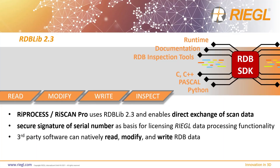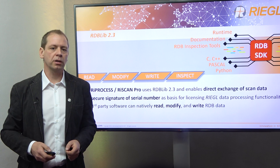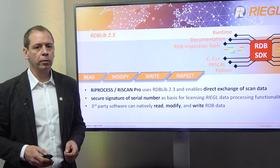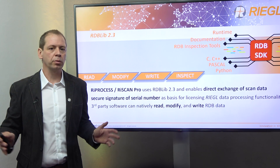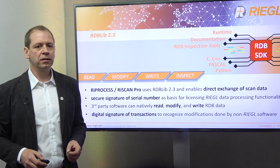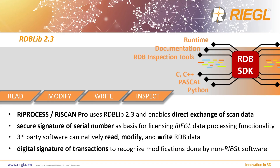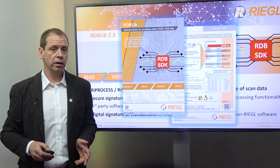I would also like to encourage you to make use of the RDB lib. If you are enthusiastic about programming in C, C++, Pascal, or Python, you will be able to read, modify, and write RDB data easily without too much effort. This can be especially interesting for performing non-standard tasks such as special data classification procedures or data analysis — there are countless possible applications. The RDB lib also adds a digital signature of transactions, which enables recognition of modifications done by non-Regal software to single files. It is free of charge and available for download from our web page, and it is well documented.